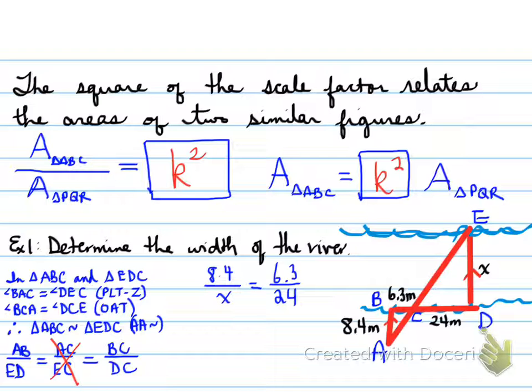Well, we cross multiply. 6.3 times X is equal to 8.4 times 24, which is 201.6. Divide by 6.3, and you get 32. So the river is 32 meters wide.